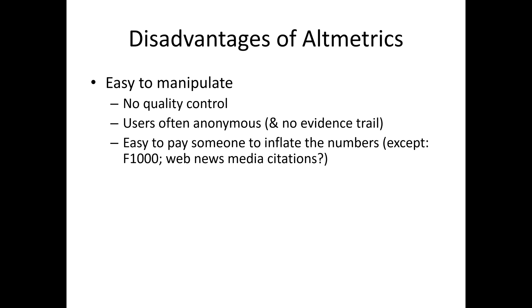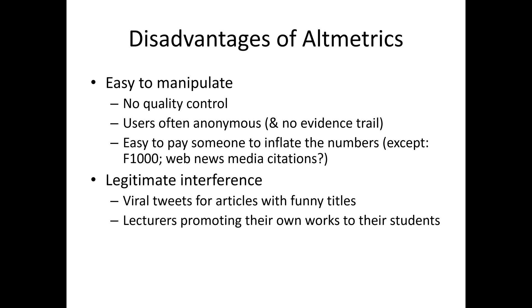Altmetrics are certainly much less robust than citations in a database like Scopus, Web of Science, or Dimensions. One problem is that there can be legitimate interference: an article might get tweeted a lot just because it has a funny title. Lecturers might also promote their own works to their students, which would inflate tweet counts in a completely legitimate way — it's an attempt to disseminate research, which is to be encouraged.